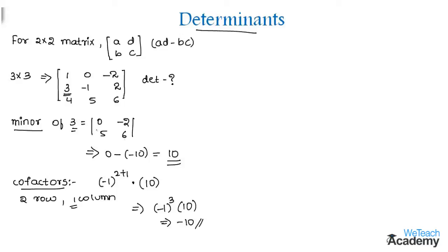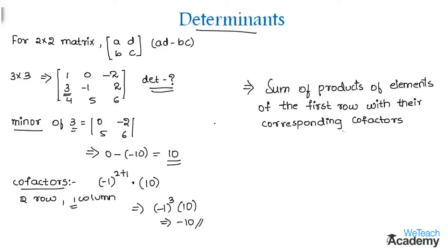So in this way we need to find minors and cofactors for all the elements present in the matrix. So after finding the cofactors we need to use the formula to find the determinant which is sum of products of elements of the first row with their corresponding cofactors.